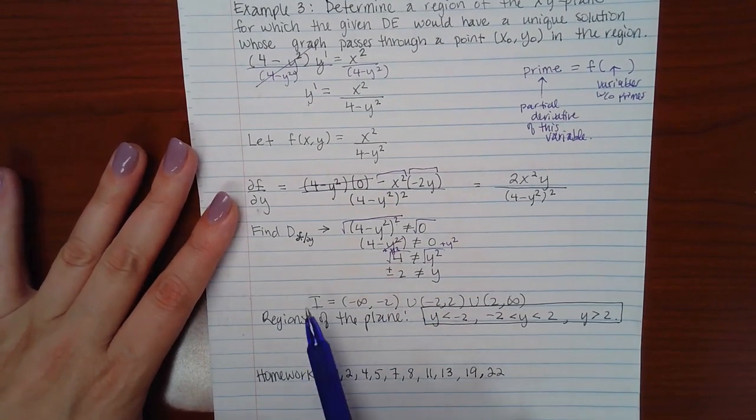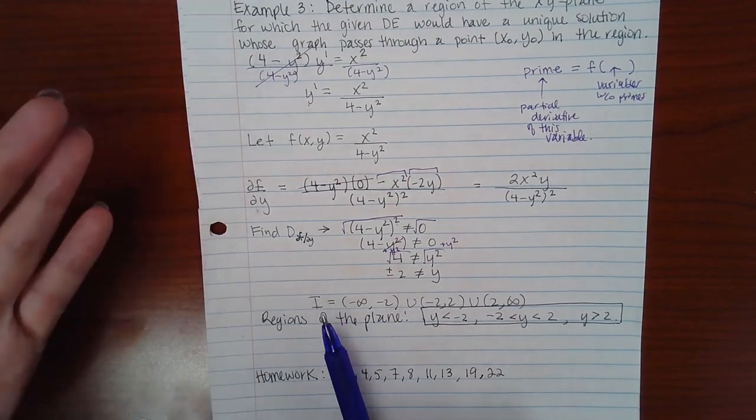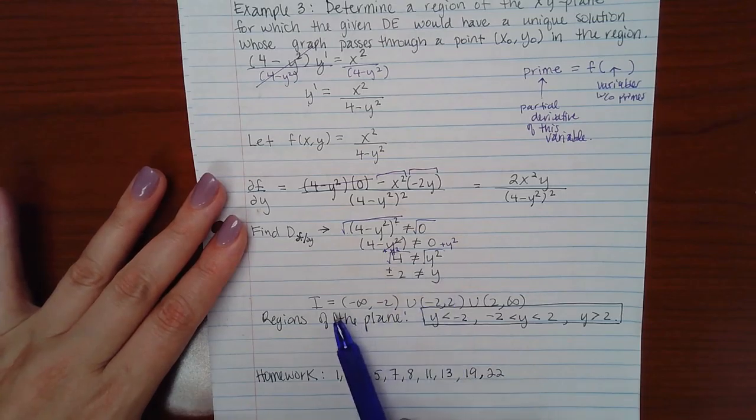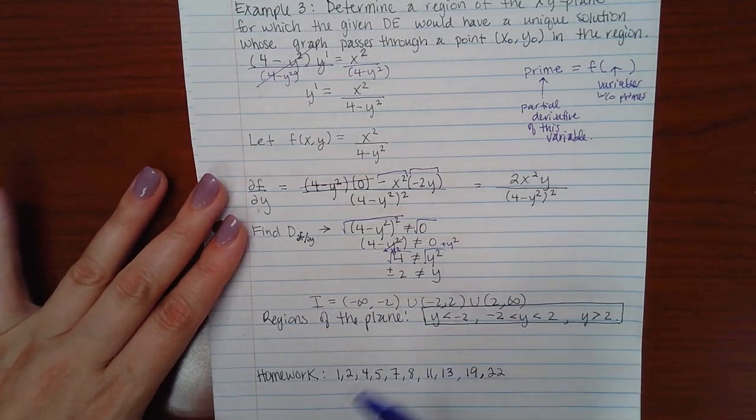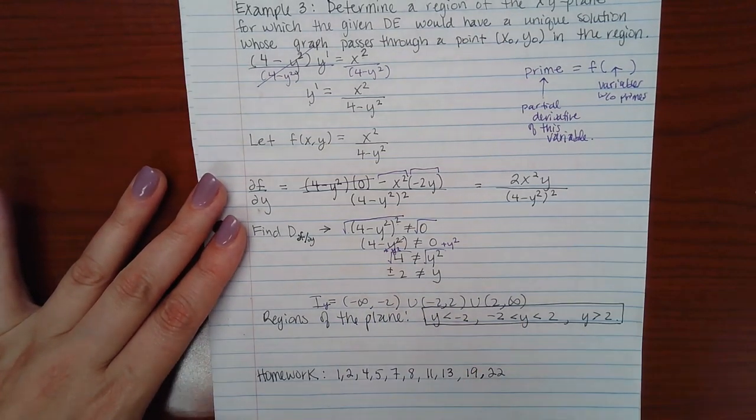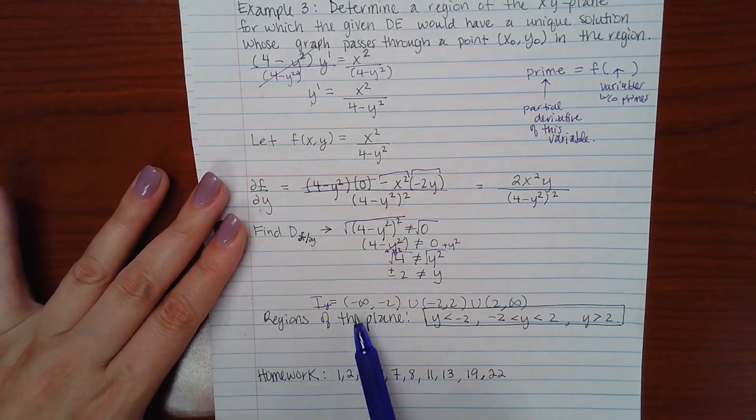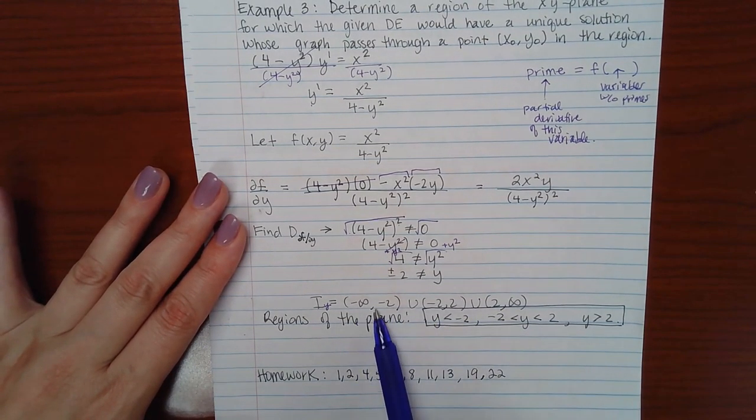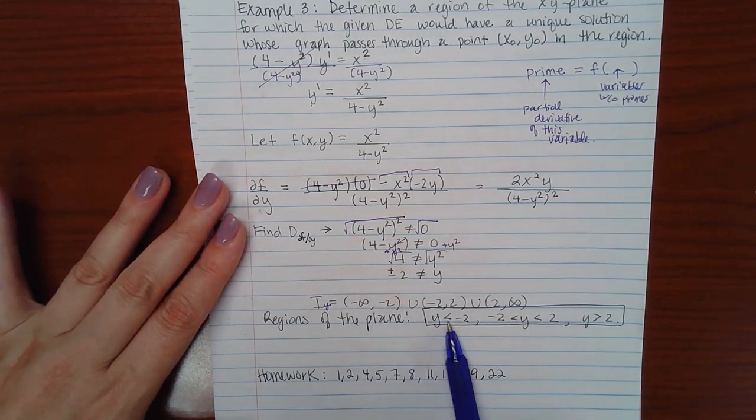So I have two things that Y cannot be. So then the interval that I found, or the region, same thing, is when Y is in this interval. So this interval pertains to the Y value, not the X value. And I get these three intervals,